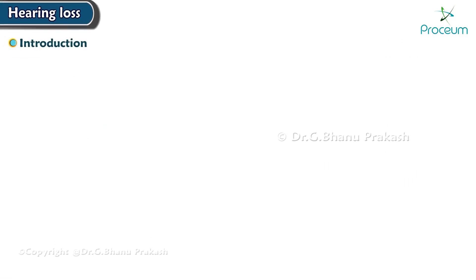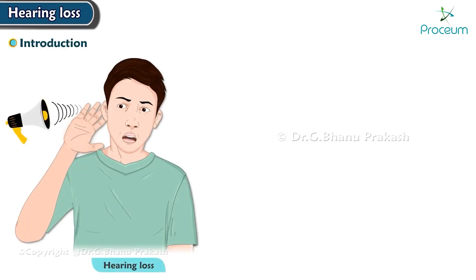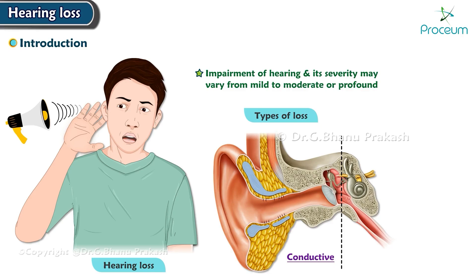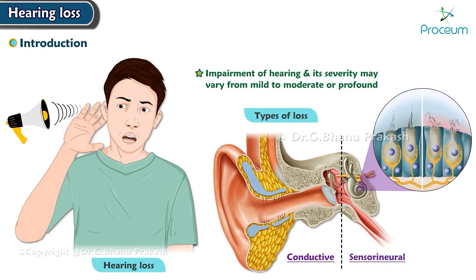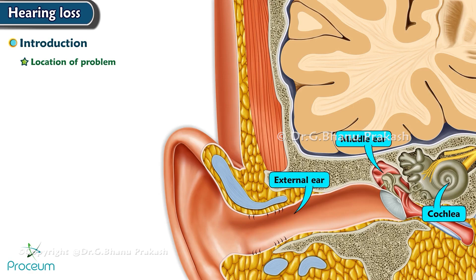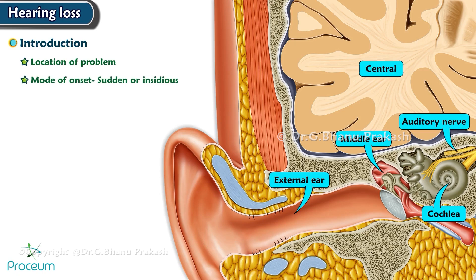Hearing loss is defined as impairment of hearing, and its severity may vary from mild to moderate or profound. It is characterized by types of loss such as conductive and sensorineural. The location of the problem is usually in the external ear, middle ear, cochlea, auditory nerve, and central pathways. Onset may be sudden or insidious, and the degree of loss is mild, moderate, or severe. Hearing loss may be bilateral or unilateral.